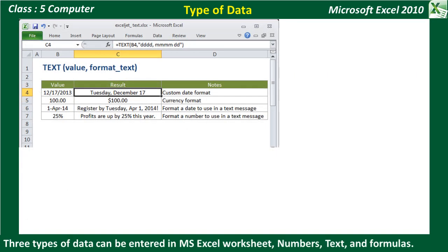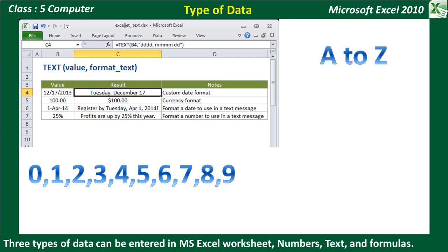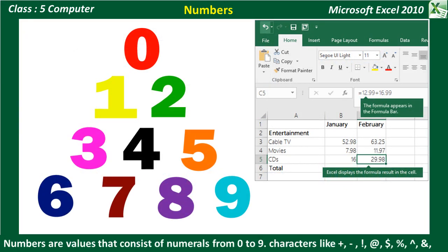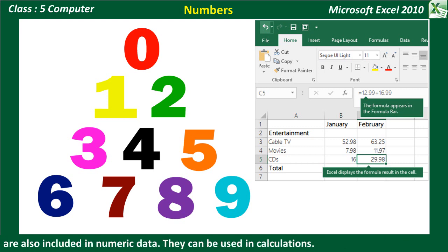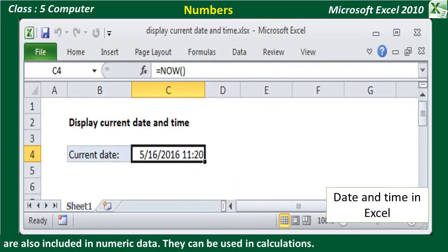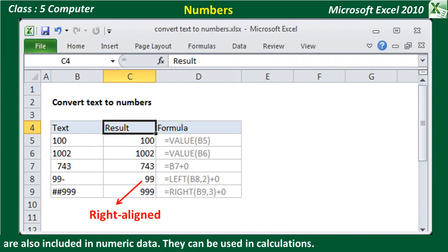Type of Data: Three types of data can be entered in a Microsoft Excel worksheet — Numbers, Text, and Formulas. Numbers are values that consist of numerals from 0 to 9. Characters like plus, dash, percent, etc., are also included in numeric data. They can be used in calculations. In addition to actual numbers, Excel also stores date and time as numbers. By default, numbers are right-aligned in a cell.